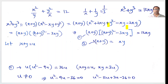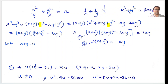Let us figure out a way where we can reduce these cubes in the form of x plus y terms. Instead of x cubed plus y cubed, if we have something of the form of x plus y to some power, that would be easier. We know x cubed plus y cubed equals x plus y times x squared minus xy plus y squared — this is a regular formula.